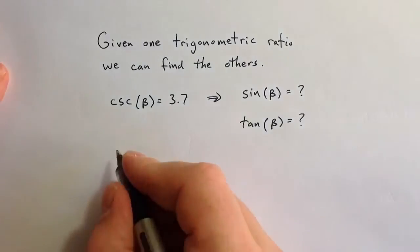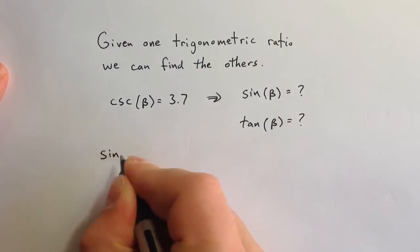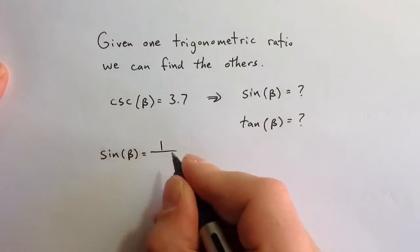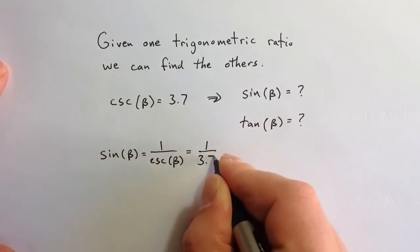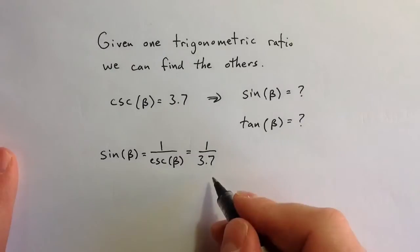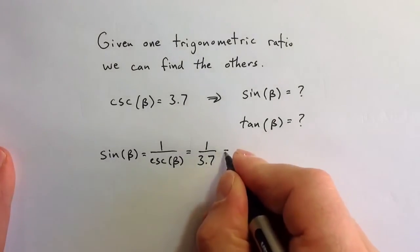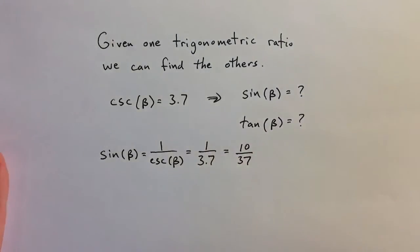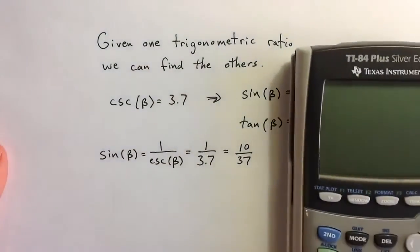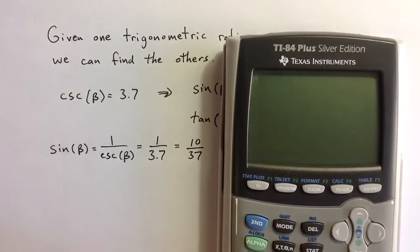Finding sine of beta is pretty straightforward. Because sine is the reciprocal of cosecant, we can simply use the fact that cosecant equals 3.7 to get a value for sine. It would be 1 over 3.7, or if we want to write that as a nicer fraction, it would be 10 over 37. Or we may want to find a decimal value for that, and we could take 10 divided by 37 or 1 divided by 3.7 and see that it's approximately 0.2703.